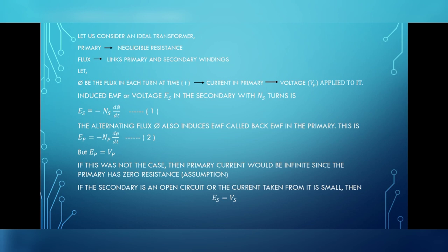If this was not the case, then primary current would be infinite since we have assumed that primary has zero resistance. If the secondary is an open circuit or the current taken from it is small, then ES equals VS.